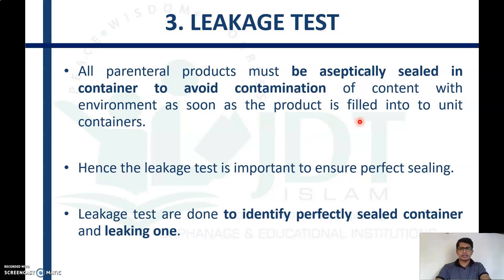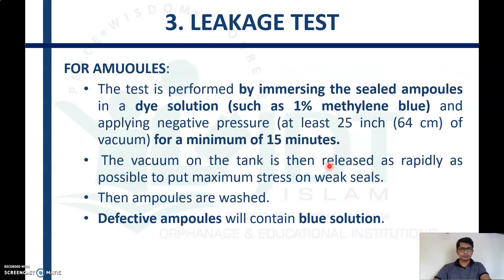As soon as the product is filled in the unit container, it is very important to ensure the sealing is perfect. The leakage test is done to identify perfectly sealed containers versus leaked containers. For ampules, this test is performed by immersing the sealed ampule in a dye solution — usually 1% methylene blue solution — and then applying a negative pressure of at least 25 inches (64 cm) of vacuum for a minimum of 15 minutes.